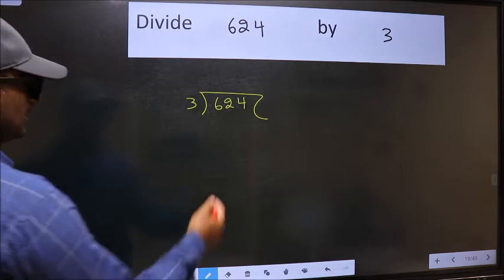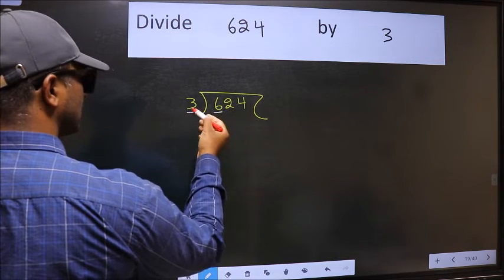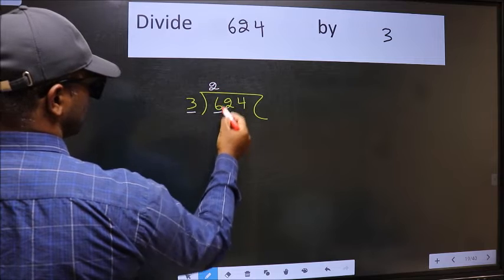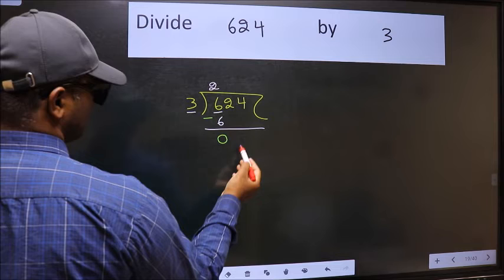Next. Here we have 6 and here 3. When do we get 6 in 3 table? 3 2's 6. Now we should subtract. We get 0.